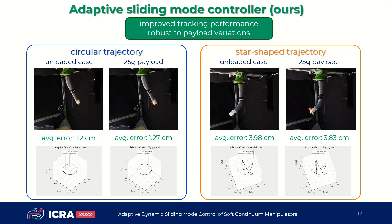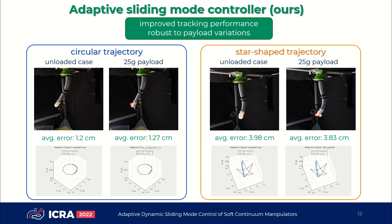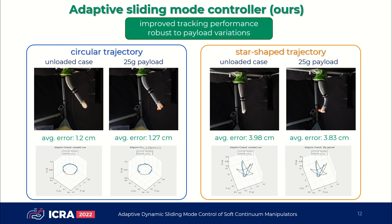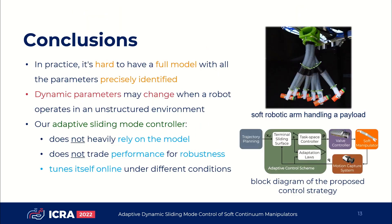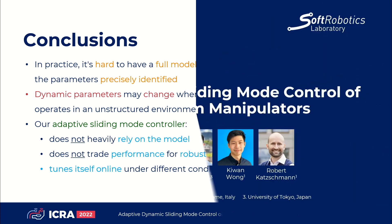The same experiments were also done with our adaptive controller. Unlike the benchmark controller, the robot is able to track the desired trajectories pretty well, and the tracking performance is maintained even when we added an unknown payload mass at the end effector. In conclusion, we have developed a robust adaptive control strategy implemented on a physical soft robotic arm, enabling soft manipulators to be used in practical applications such as pick-and-place tasks involving unknown mass objects.